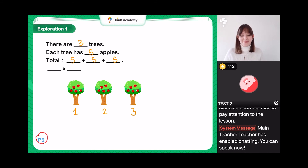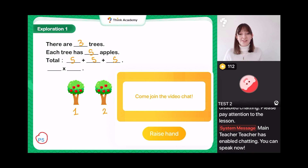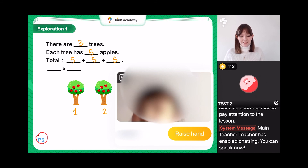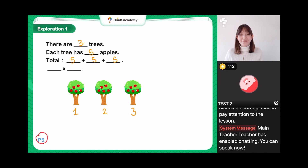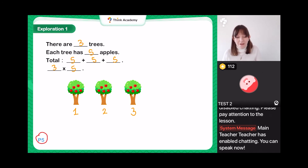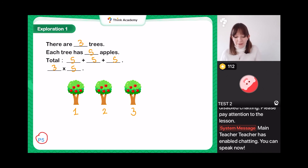Who thinks they can tell me how we would write this as a multiplication sum? Remember — we do the number of groups, the number of trees, times by the number of apples on a tree. Victoria says five times three, or three times five. Excellent, Victoria — perfect! Wonderful job. Victoria gave us both ways of writing our sum.